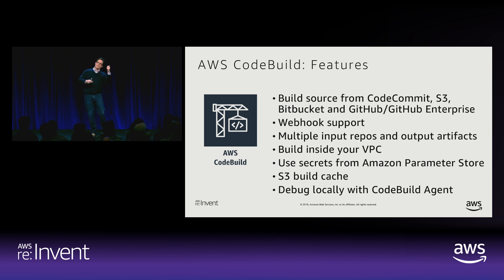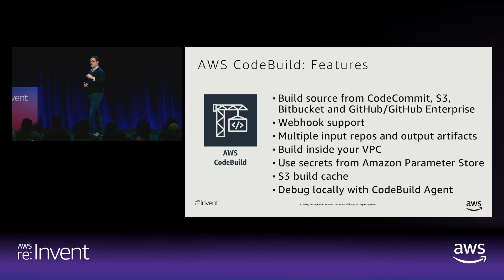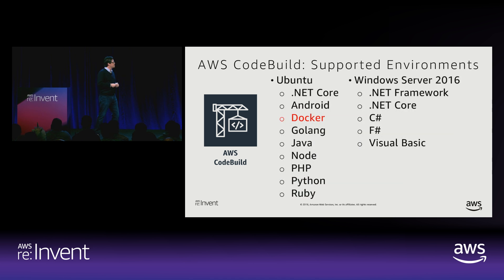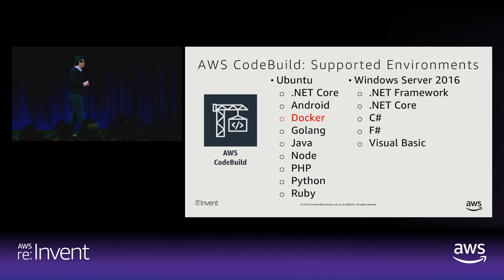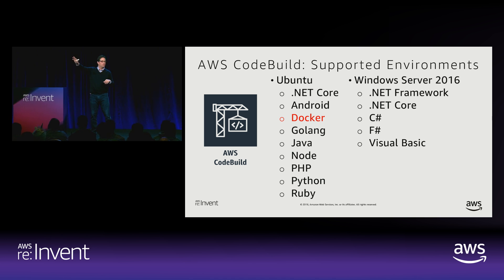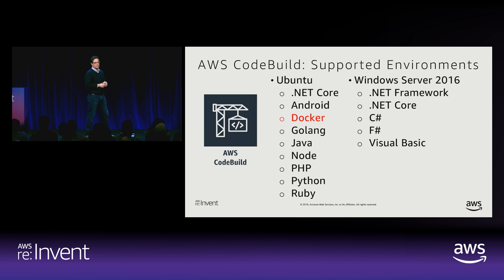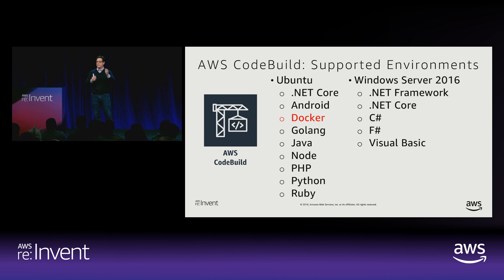What does CodeBuild support out of the box? Both Windows and Linux, with many standard environments. What if you're using something not in the standard build environments? That's why we have Docker — if you want to build your own custom environment with your own language or runtime, as long as it works within a container, you can build your own customized environment. For the demo I did that: I took a standard Golang image and added some Kubernetes tooling so I can push to a Kubernetes cluster, building a little custom environment.